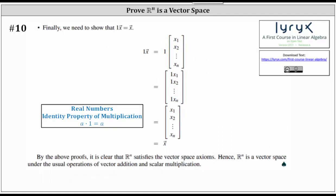For our last step, step ten: we show that 1 times vector x equals vector x. Performing scalar multiplication with 1, we get exactly the components of vector x, showing 1 times vector x equals vector x. Step ten is complete. By the above proofs, it is clear that Rn satisfies all vector space axioms. Hence Rn is a vector space under the usual operations of vector addition and scalar multiplication.